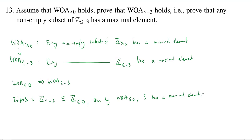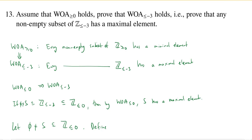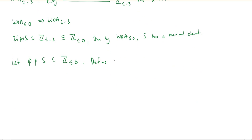So I don't actually have to prove WOA ≤ -3 directly — I can prove WOA ≤ 0, and that gives me WOA ≤ -3. To prove WOA ≤ 0, we let S be a non-empty subset of the non-positive integers Z ≤ 0. Because we are assuming WOA ≥ 0 holds, I want to build a non-empty subset of Z ≥ 0. So define -S to be the collection of all elements of the form -x where x is in S — I'm multiplying all elements of S by -1.